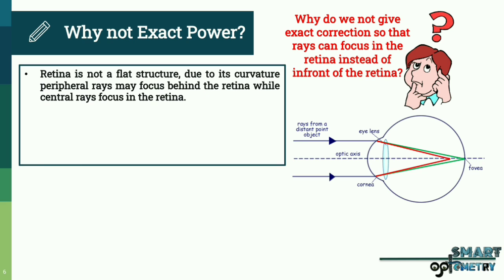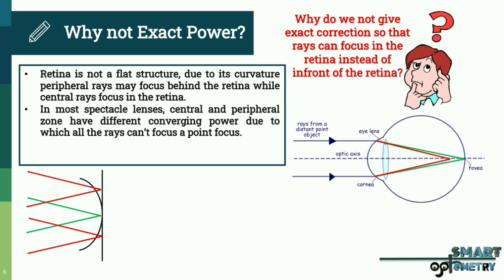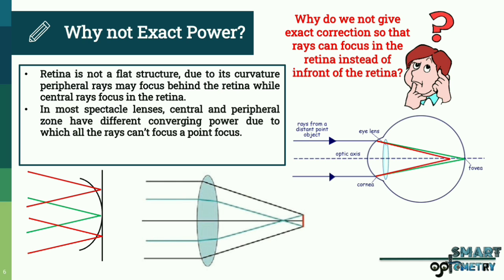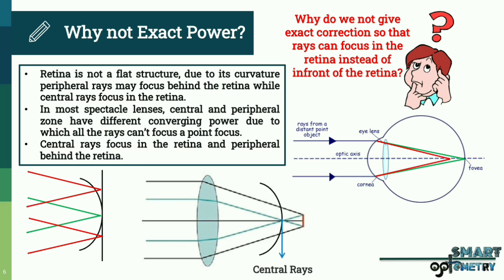Retina is not a flat structure. Due to its curvature, peripheral rays may focus behind the retina while central rays focus on the retina. In most spectacle lenses, the central and peripheral zones have different converging power, due to which all rays can't focus at the same point. Central rays focus on the retina, but peripheral rays focus behind the retina.